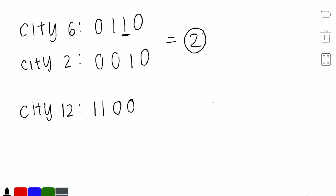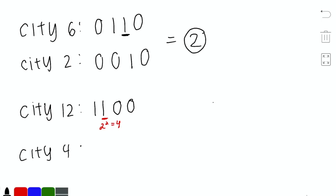Similarly for city 12, its binary representation is 1100. The rightmost 1 is at the position representing 2 to the power of 2, which is 4. Connecting city 12 to city 4 gives a bitwise AND cost of 4, the minimum possible for city 12.